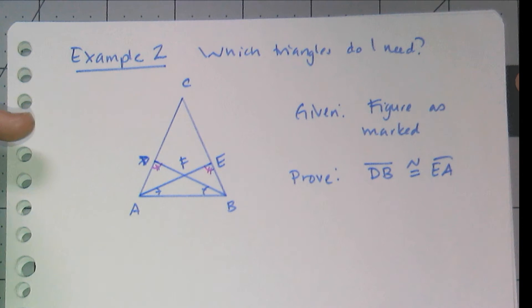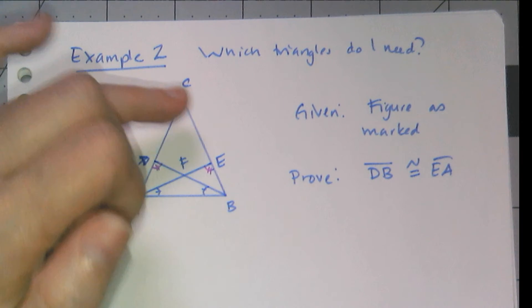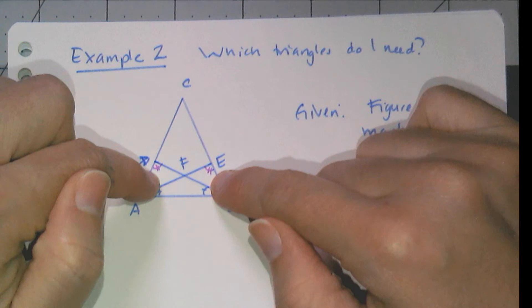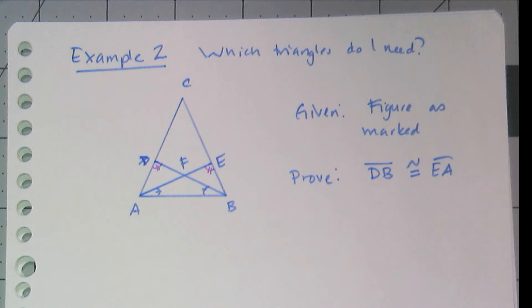Now example two is a little more complicated because I don't know which triangles I need to use yet. I've got a ton of little triangles here. I have the big triangle ABC, a bunch of smaller triangles, pairs of triangles, this little triangle here. Like, which one am I supposed to use?